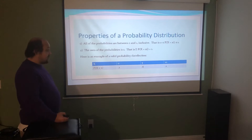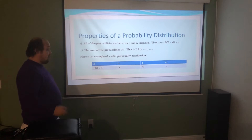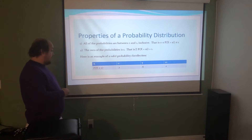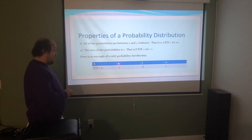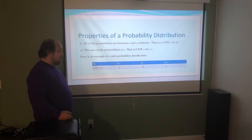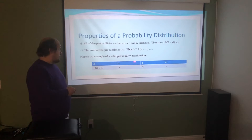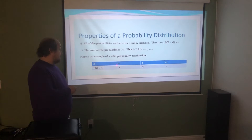Here's an example of a valid probability distribution and how to check it. First, check that each probability is between 0 and 1: 0.2, 0.6, and 0.2 each qualify. The top row is the x values; the bottom row is the probability. So x takes on the value 0 with probability 0.2, the value 5 with probability 0.6, and the value 10 with probability 0.2. Second, check that 0.2 + 0.6 + 0.2 = 1. It does: 0.2 + 0.6 = 0.8, and 0.8 + 0.2 = 1.